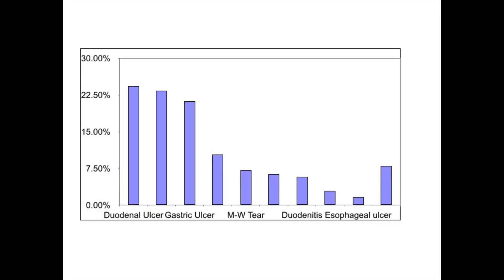This shows roughly what the percentages look like. The vast majority of patients would have duodenal ulcers, gastric erosions, or gastric ulcers as a possible cause, followed by varices, duodenitis, oesophagitis, and then the others.